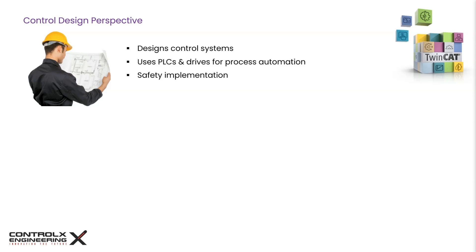A control engineer, as the name suggests, is the architect for control system design. These systems regulate the behavior of machines, processes, and devices to achieve the desired outcomes. Part of their role is to correctly implement automation components like PLCs and drives, as well as safety implementation based on specific machine design and risk profile.